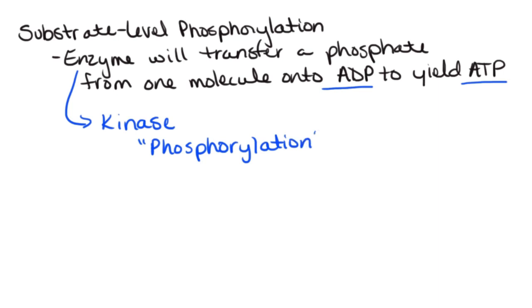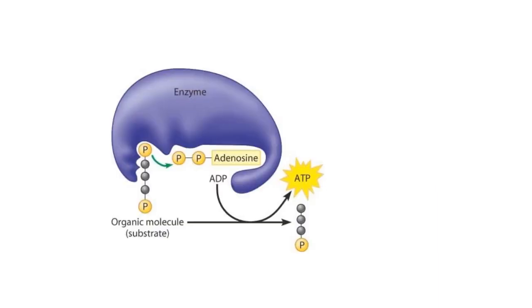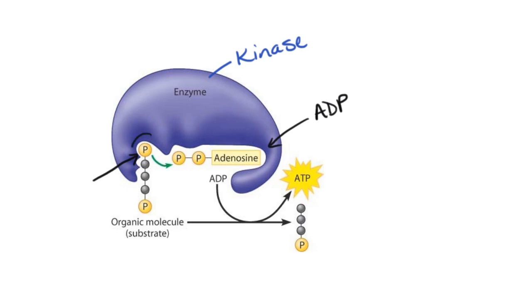Phosphorylation would be adding a phosphate group to something. As we look at this picture, we have an enzyme — this enzyme represents that kinase enzyme — and that kinase enzyme is going to have two different active sites. We see an active site for the molecule that actually has the phosphate group to start with, and over here we have an active site for ADP. What this kinase enzyme is going to do is remove this phosphate group and transfer it onto the ADP. When it does that, we get that valuable end product, which is ATP. So the enzyme will be releasing the ATP along with the molecule that has now lost a phosphate group.